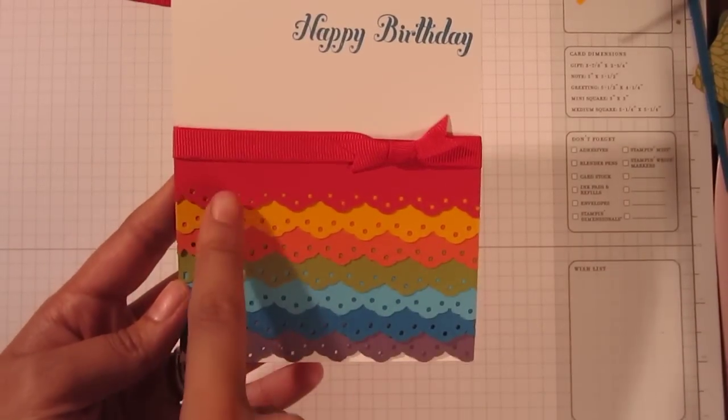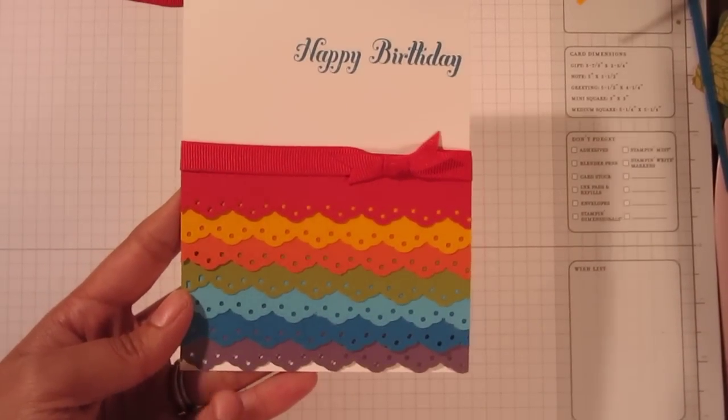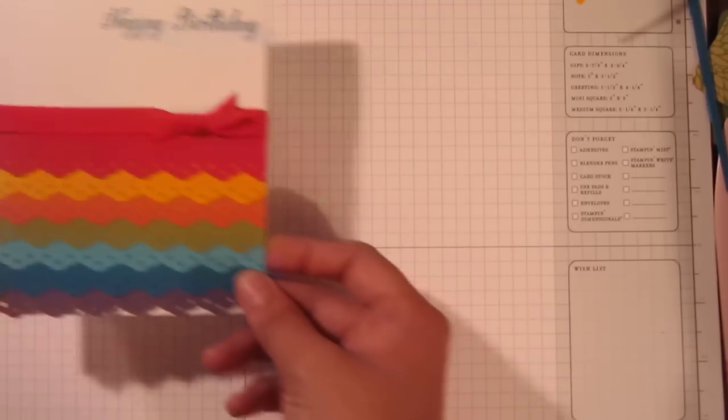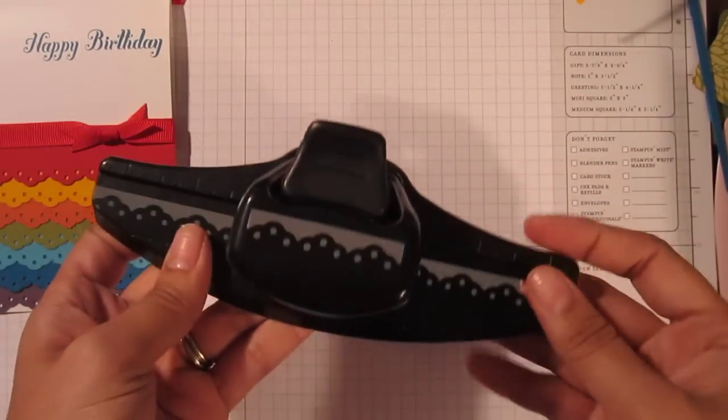Today I want to show you how to make this really neat rainbow card using one of the items that's on the clearance rack, which is the Scallop Eyelet Punch.